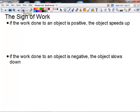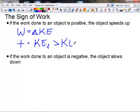The sign of work. If the work done on an object is positive, the object will speed up. So if we're saying work equals delta KE net work, and if the work is positive, then that tells you that KE final is greater than KE initial.